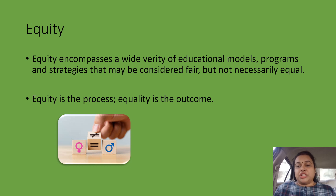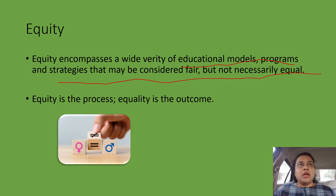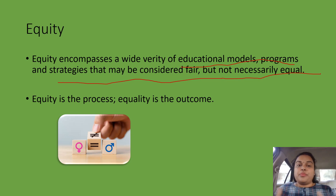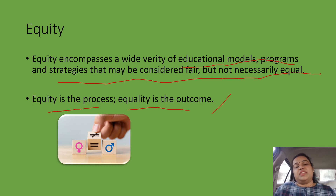Equity encompasses a wide variety of educational models, programs, or strategies that may be considered fair but not necessarily equal. If we are talking in the sense of education — educational models, programs, strategies — they should be fair, with no bias: equal for male, female, higher, lower, rich and poor. If we are not biased and giving fairness through that program or model and reaching everyone, that is the process. The result of that process will give us equality. The result is equality and the process is equity. Equality does not come on its own; there is a process, and that process is equity.